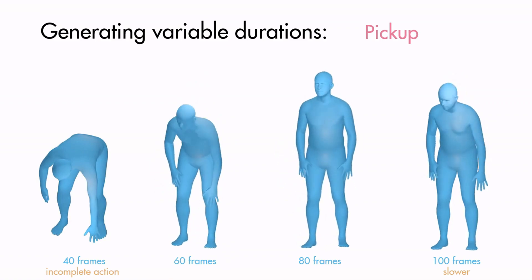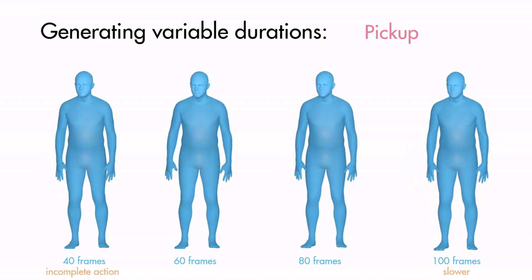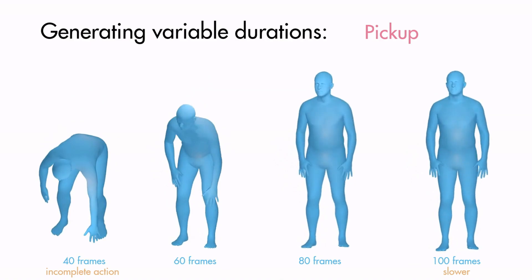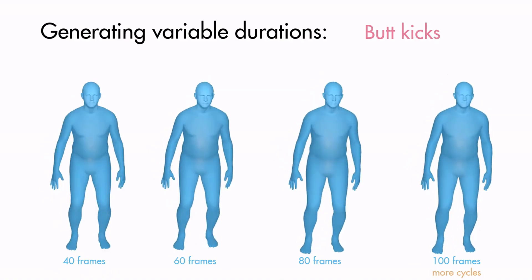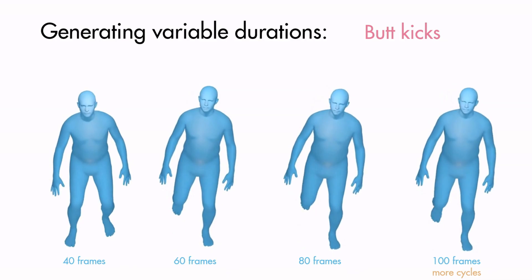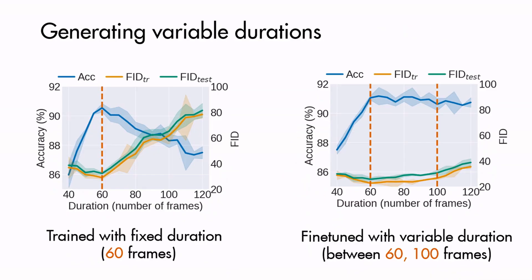We see that while all generations bend down approximately at the same time, the long generations take more time before straightening up. For cycling actions, the model produces more cycles. In our experiments, we found that it's best to train the model first with fixed durations, then fine-tune with variable durations.